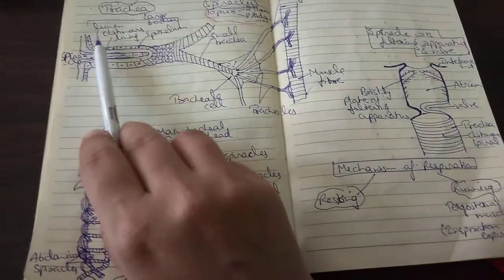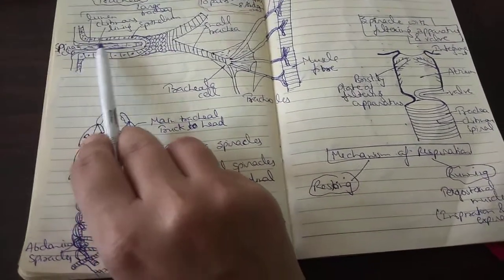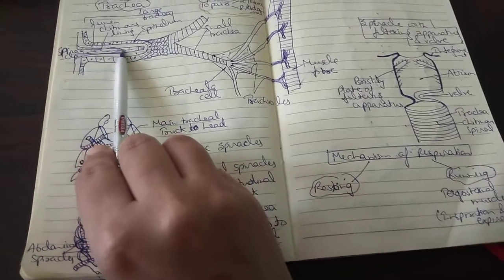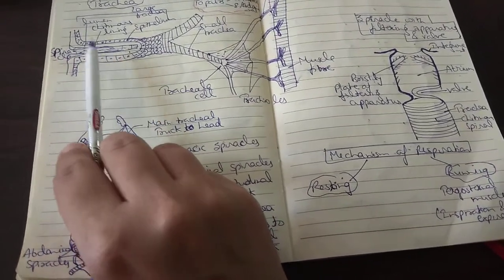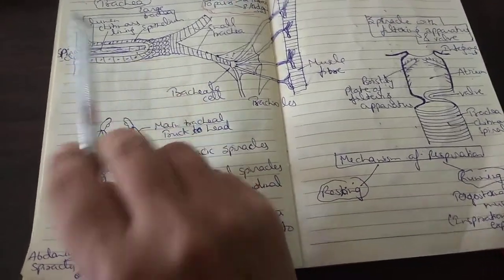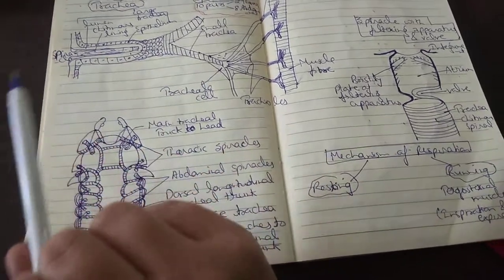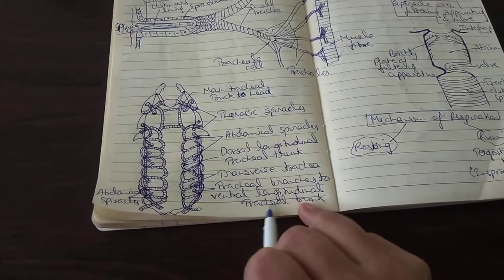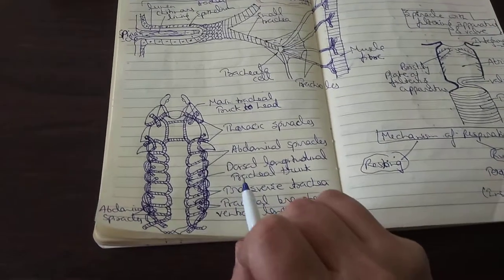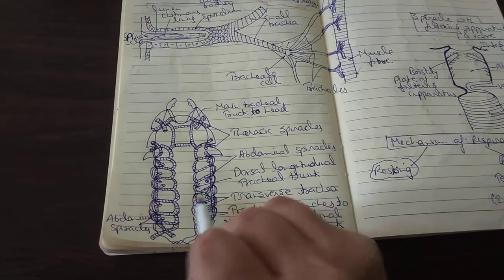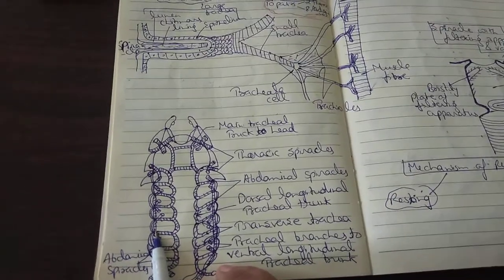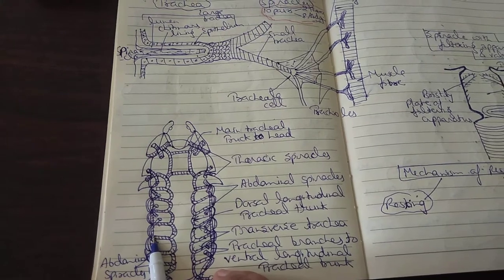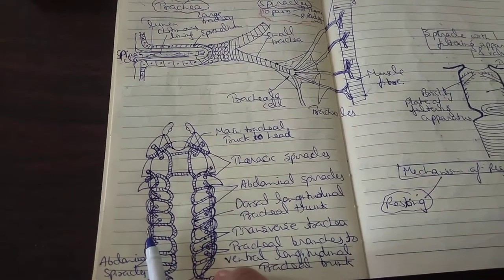The cuticular lining of the trachea is continuous with the exoskeleton and is shed at the time of molting. Molting is the shedding of the cuticle when the cockroach is in the metamorphosis stage — the cuticle is removed along with the exoskeleton. There are 3 pairs of longitudinal tracheal trunks: dorsal longitudinal tracheal trunks, ventral longitudinal tracheal trunks, and lateral longitudinal tracheal trunks in the abdominal regions.